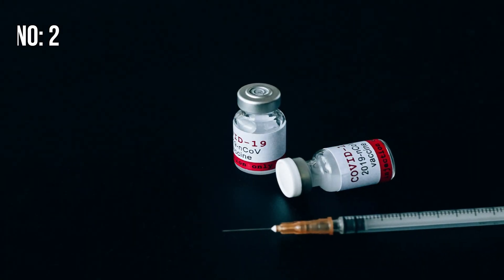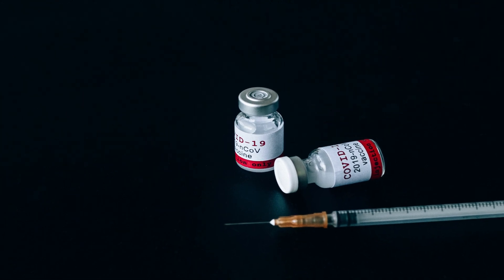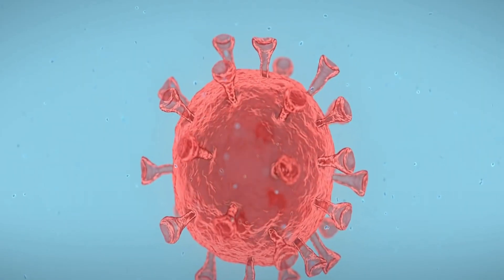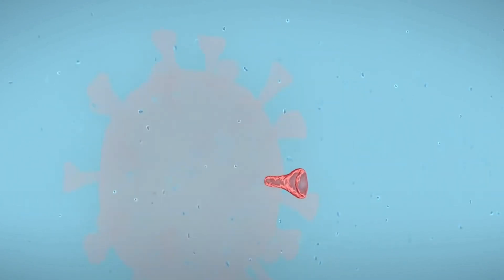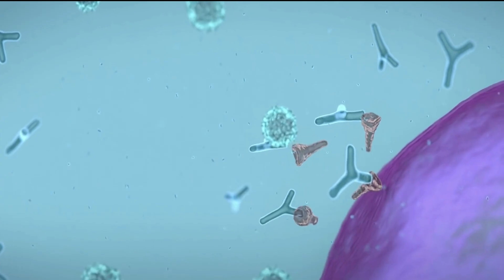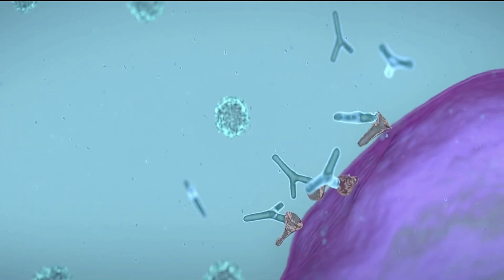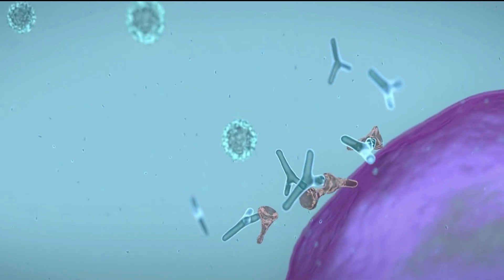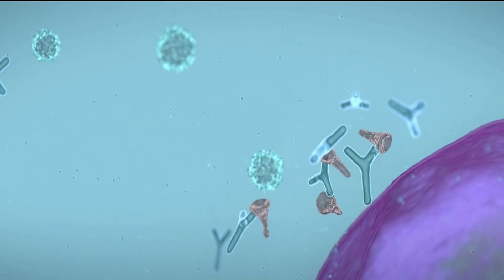Protein subunit vaccines include harmless pieces, proteins, of the virus that causes COVID-19 instead of the entire germ. Once vaccinated, our bodies recognize that the protein should not be there and build T lymphocytes and antibodies that will remember how to fight the virus that causes COVID-19 if we are infected in the future.